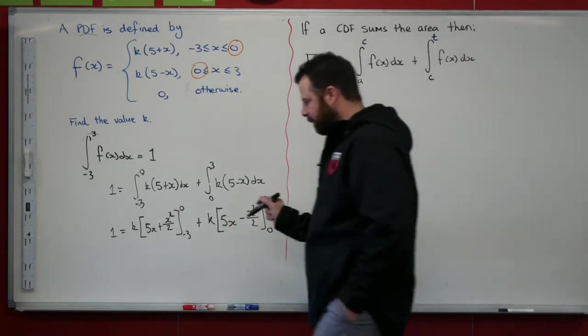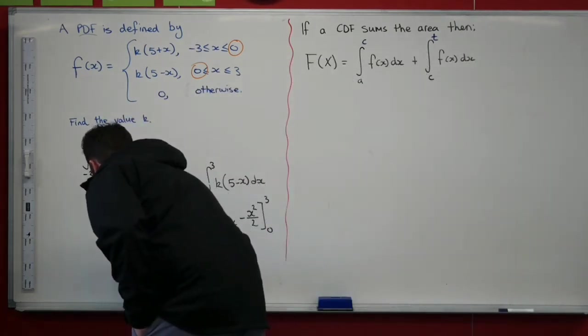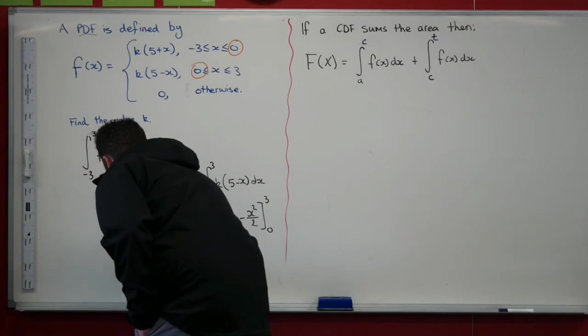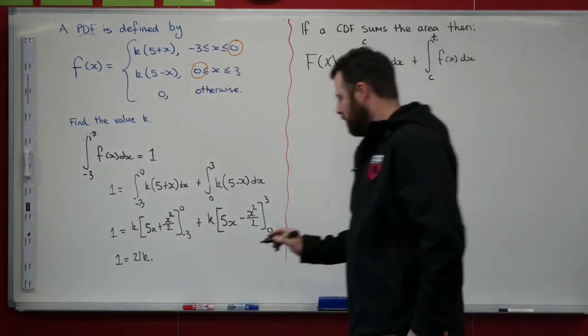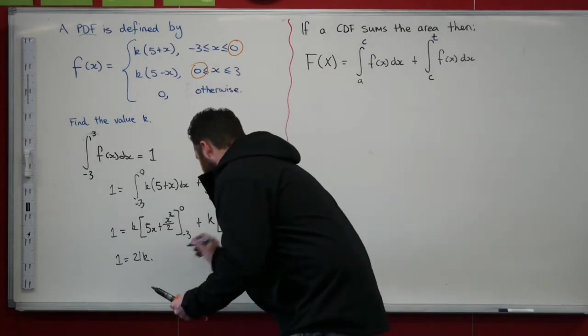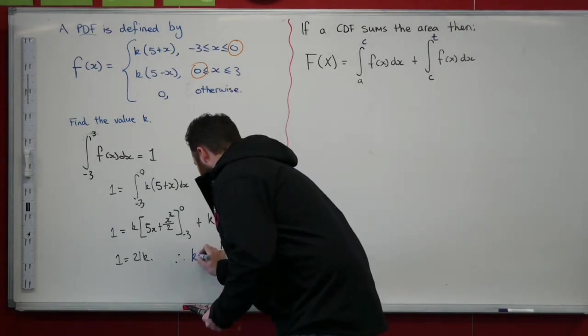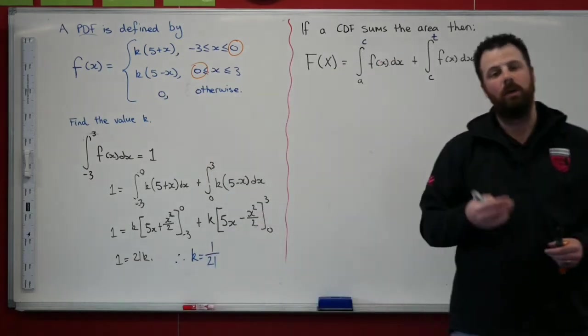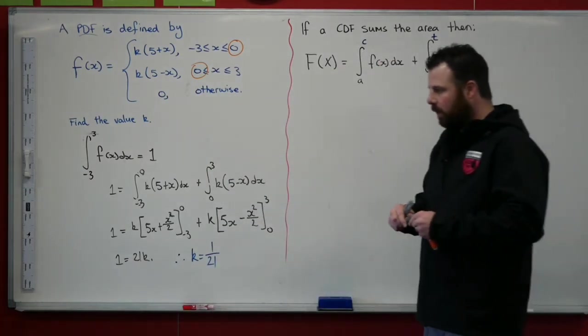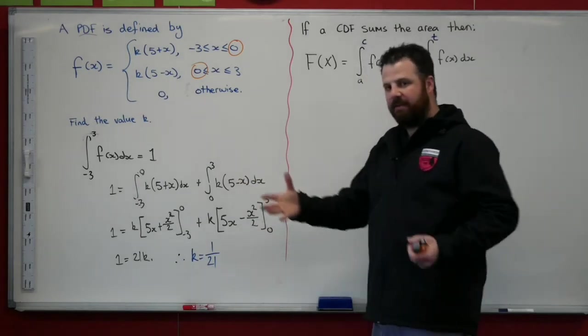When we evaluate that, what we get is 1 equals 21k. So therefore, k is equal to 1/21. Alright, so we've got that. We've found the value of k.